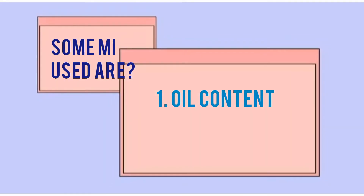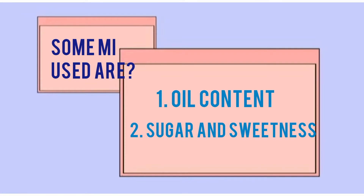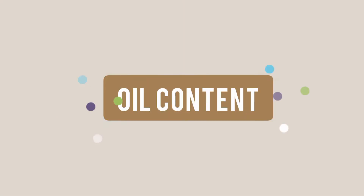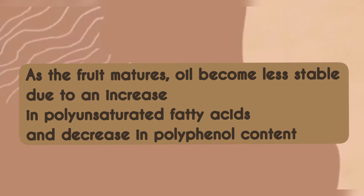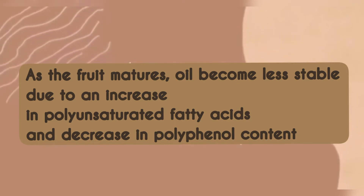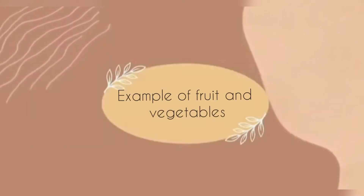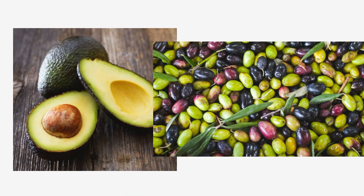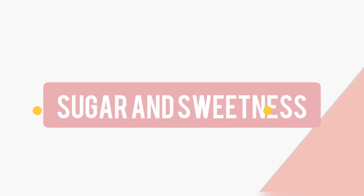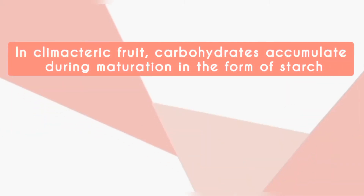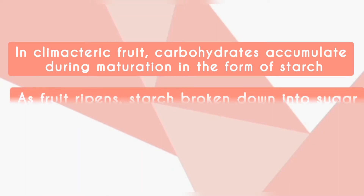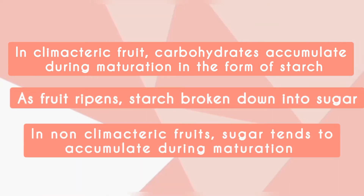Some maturity indices used are: one, oil content; and two, sugar and sweetness. Regarding oil content, as the fruit matures, oil becomes less stable due to an increase in polyunsaturated fatty acids and a decrease in polyphenol content. Examples include avocado and olive.